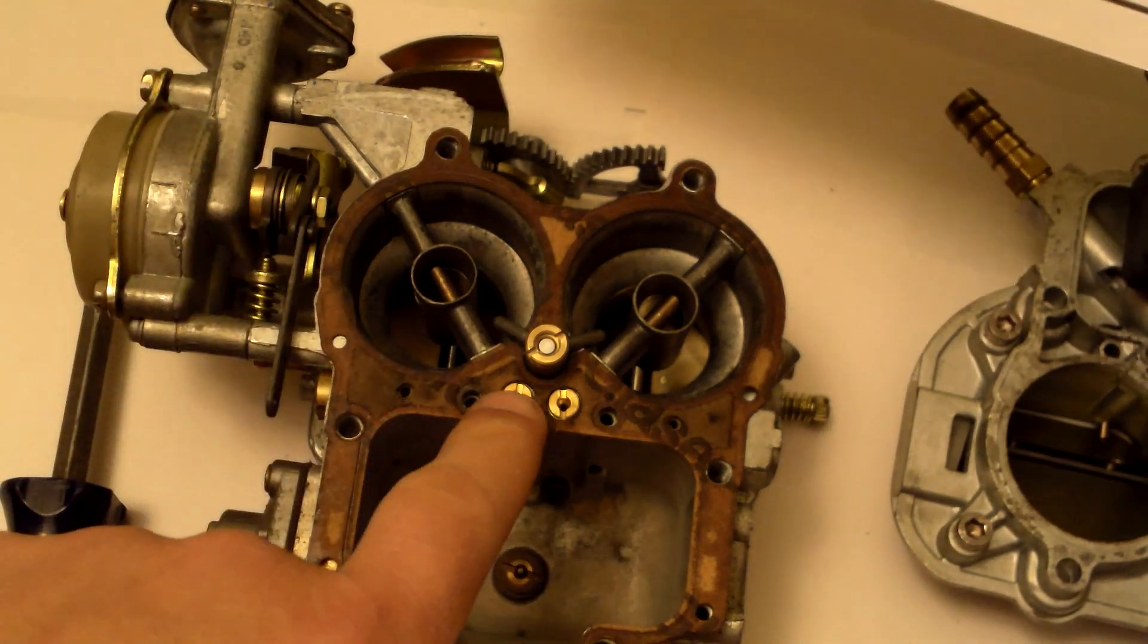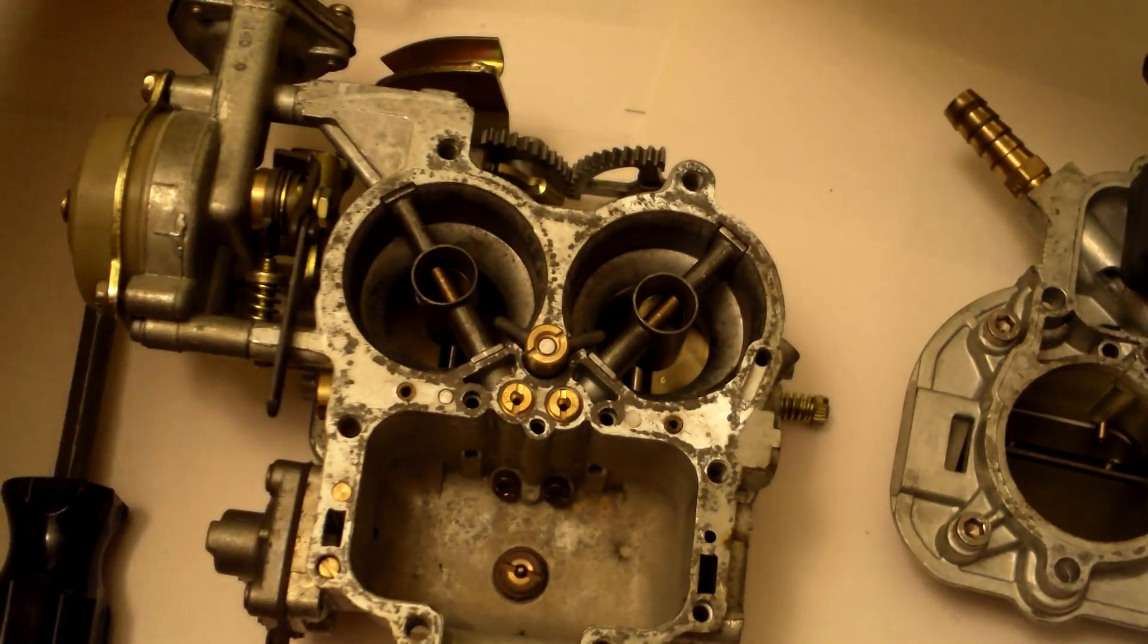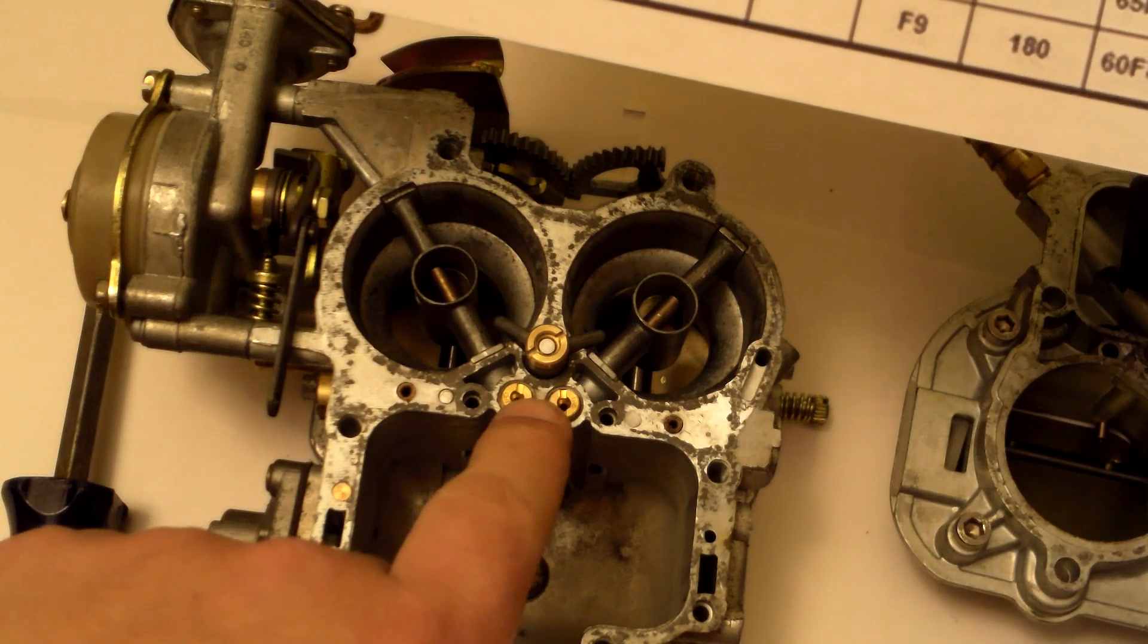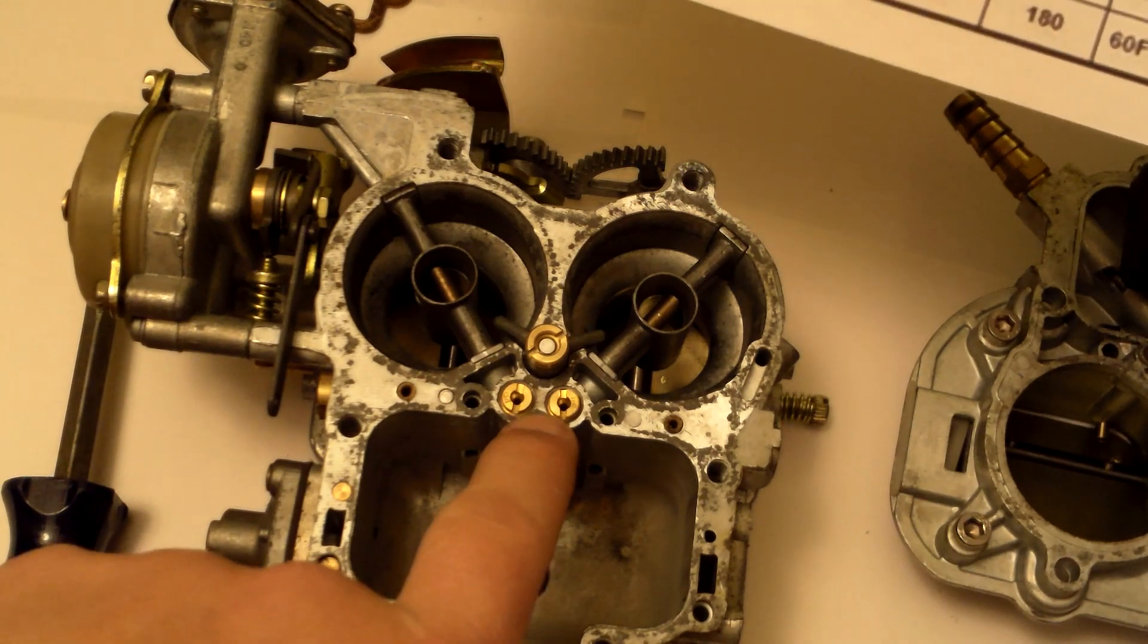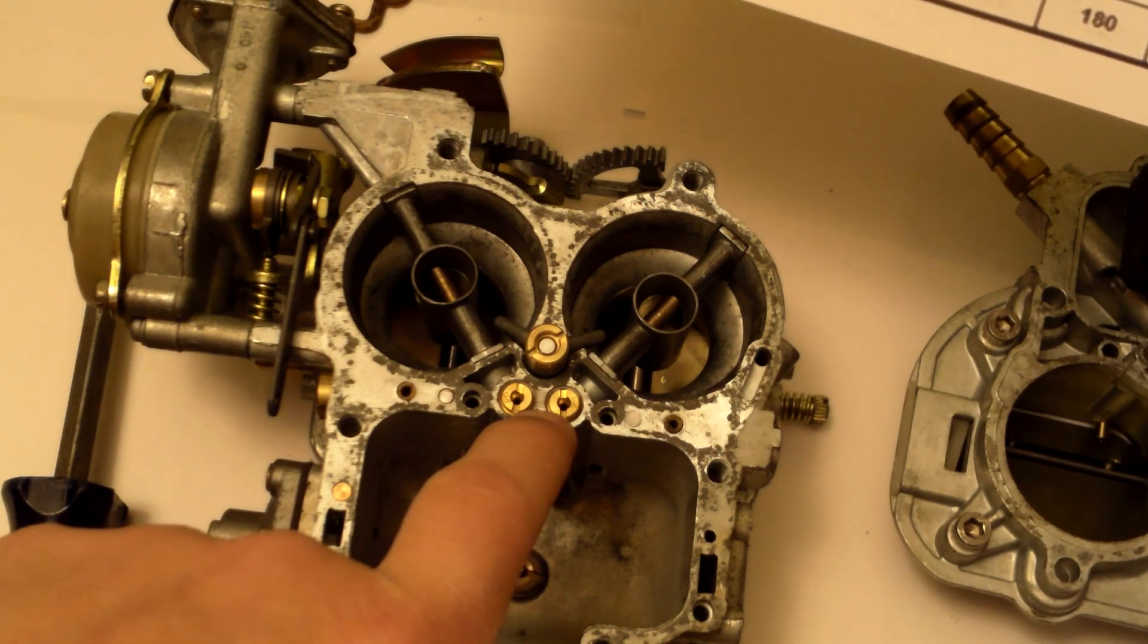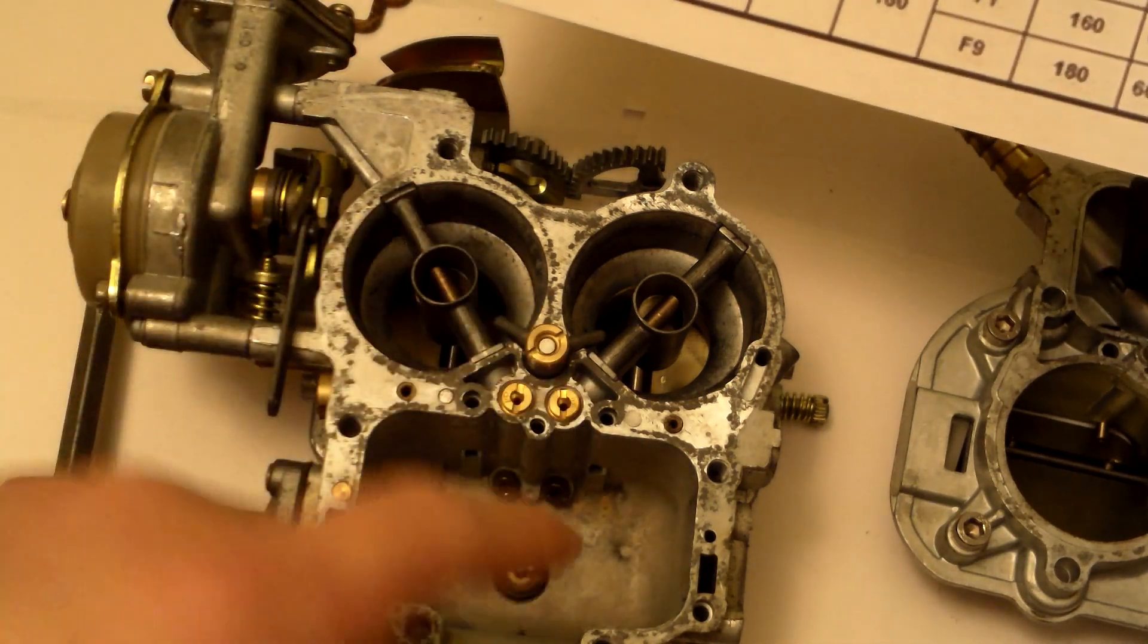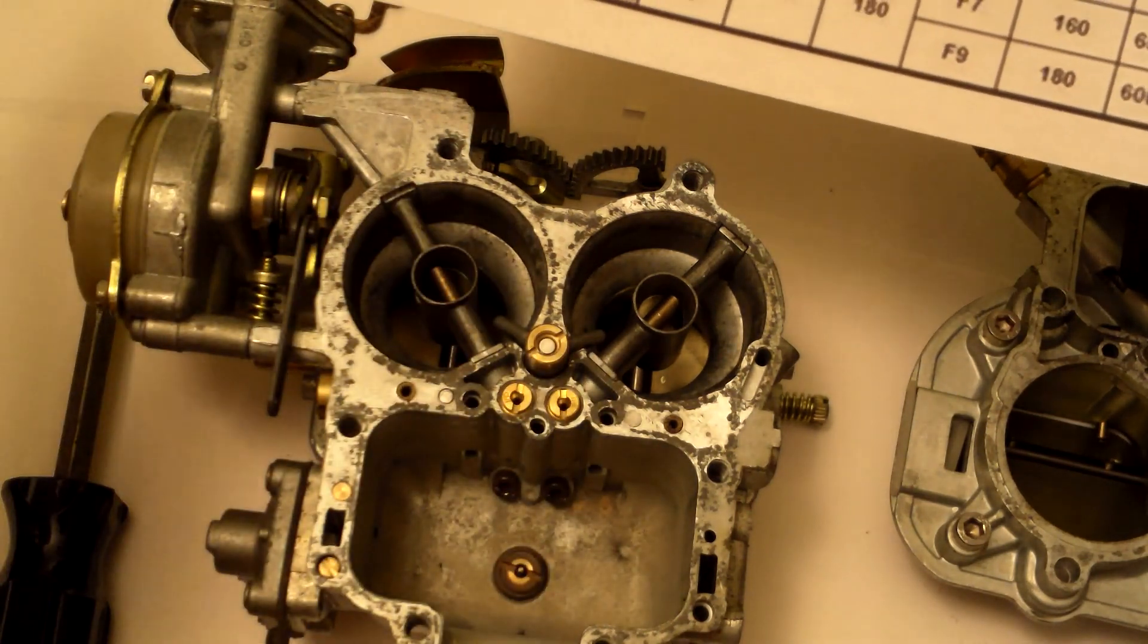The emulsion tubes, which are underneath these. You take these off, and they're right under there. They should be F-50s, which they are. The air corrector jets, now that's these right here. When I pulled this off, these had 170s. The lower the number gives you less air, so there's more fuel, so it makes it run richer. I might go back to them, but I put 185s in there just to start with Weber's suggestions.